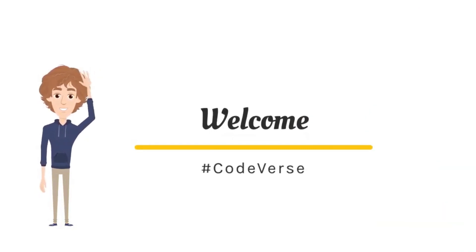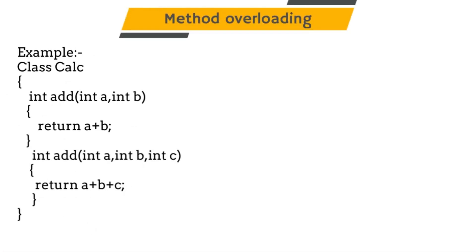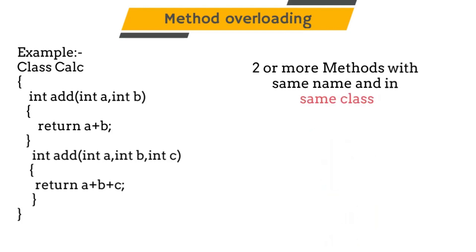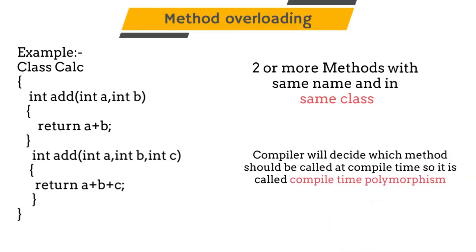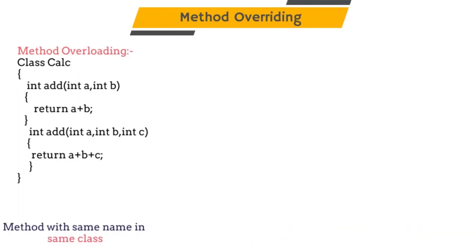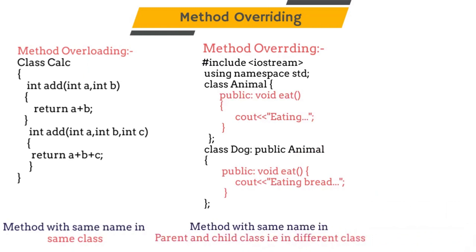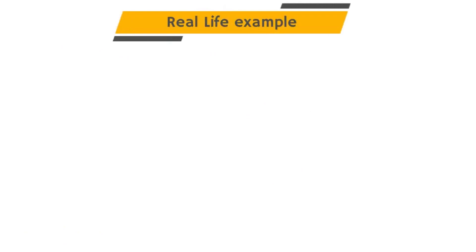In this video we will learn about the difference between method overloading and method overriding. When we create two or more methods with the same name in one class, it is called method overloading. It helps to increase the readability of a program and is compile-time polymorphism, meaning the compiler decides which method to call while compiling the code. Method overriding means creating two or more methods with the same name in a parent and a child class — that is, in two different classes — and it is used to provide a specific implementation of that method.